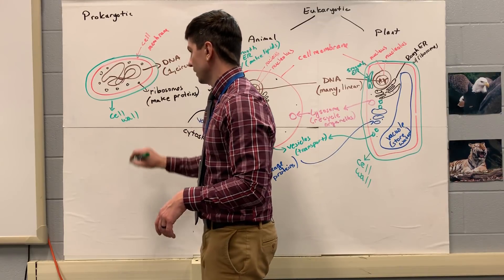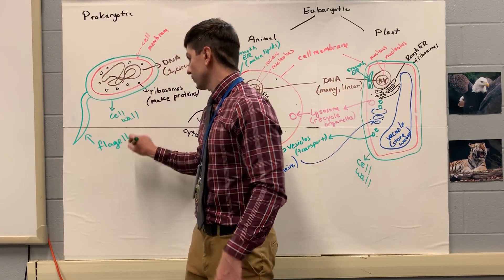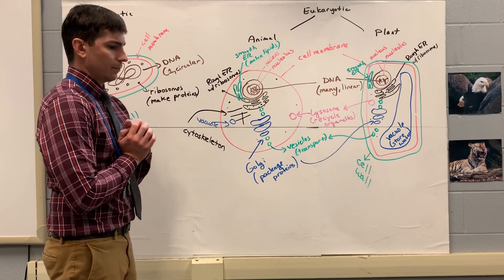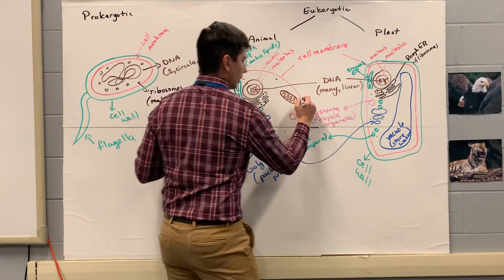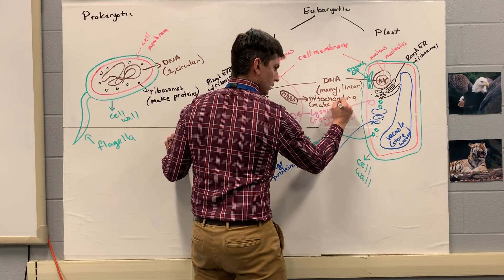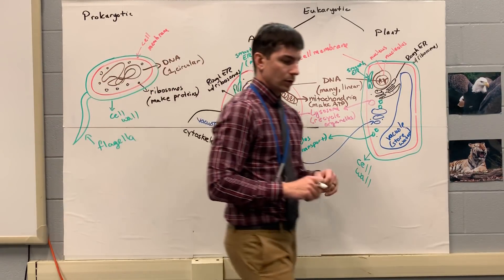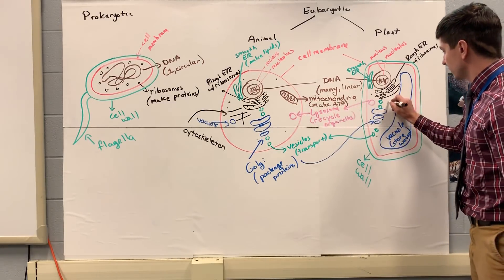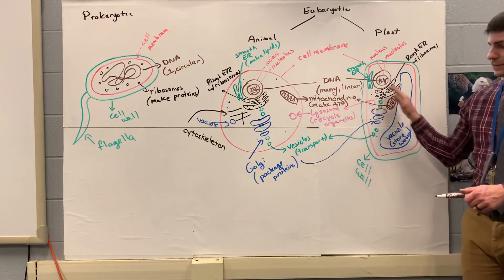The last thing for our prokaryotic cell is the flagella, which helps the prokaryotic cell move around. We're also missing one major organelle on our animal cell — the mitochondria. It makes ATP for us through cellular respiration. Every single cell needs ATP. So both animal and plant cells have mitochondria — we'll draw that in on the plant cell too.